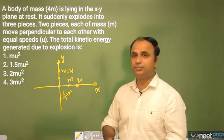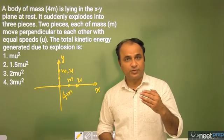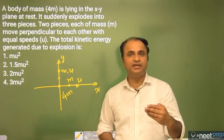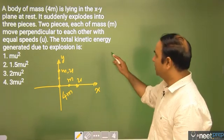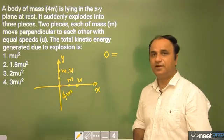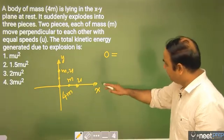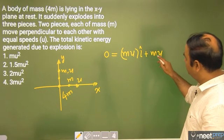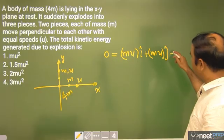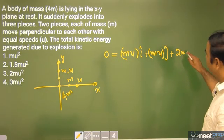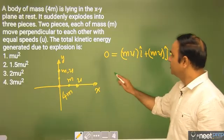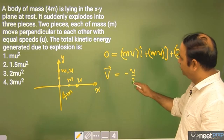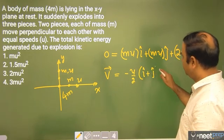The third particle, how much will it be? Total kinetic energy generated due to explosion we need to calculate. For kinetic energy we need the speed of all three particles, and to find speed we'll use momentum conservation. Initially momentum was 0, and afterwards if we look in the x direction mu i cap, in the y direction mu j cap, and the third particle has mass 2m and velocity unknown. From here v vector comes as minus u by 2 times i cap plus j cap.